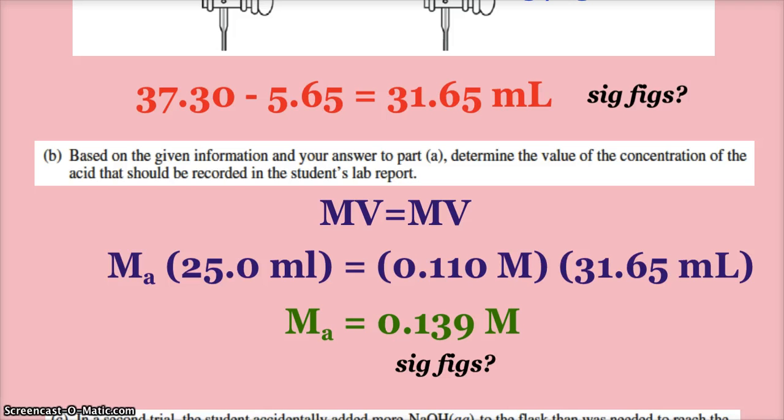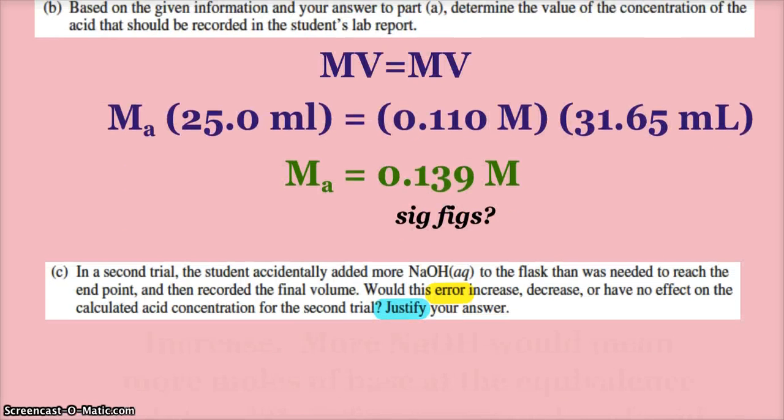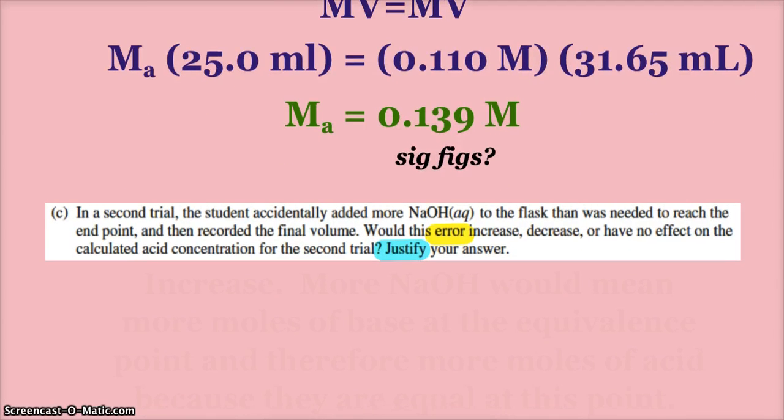Now the last part here: in a second trial, the student accidentally adds more sodium hydroxide to the flask. So would this error increase, decrease, or have no effect on the calculated acid concentration for the second trial and justify? If you used too much base, then you would think that there were more moles of base.